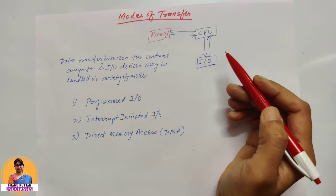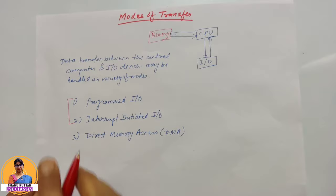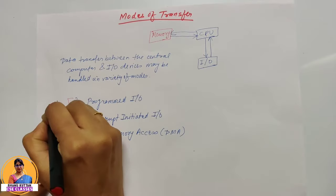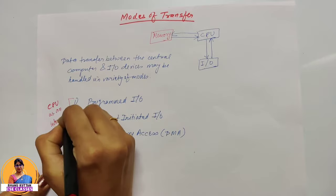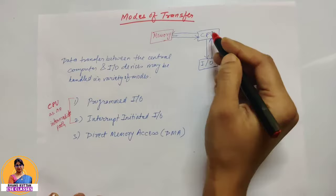Programmed I/O and interrupt initiated I/O are the modes where the CPU works as an intermediate path. You can see when the I/O devices communicate with the memory, the CPU will be in between here.